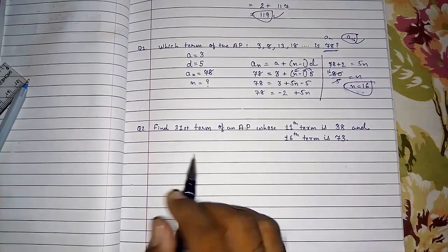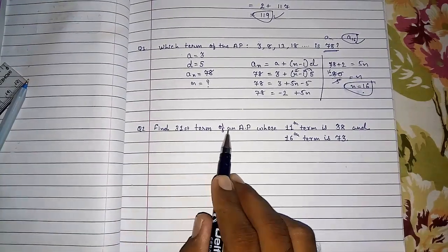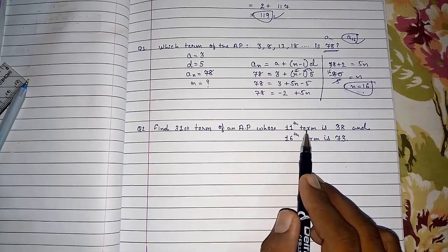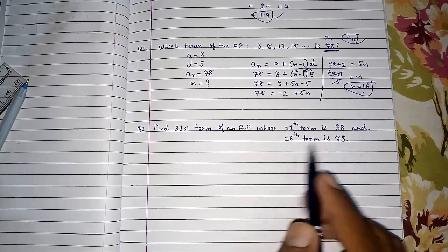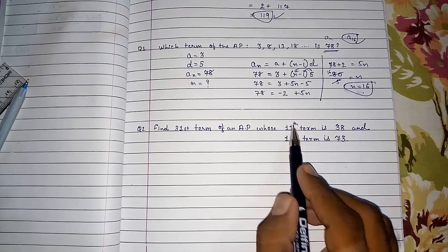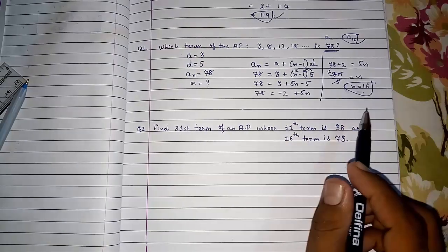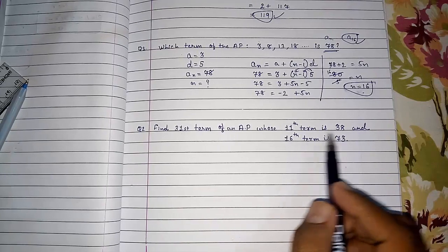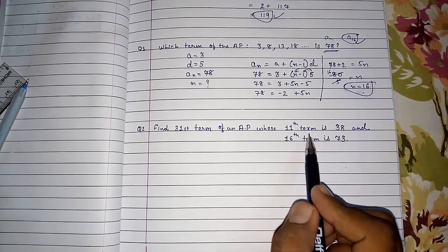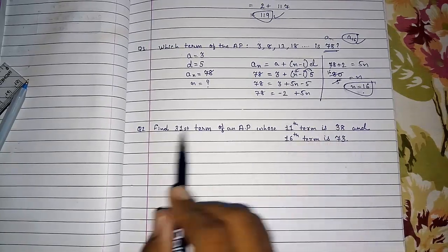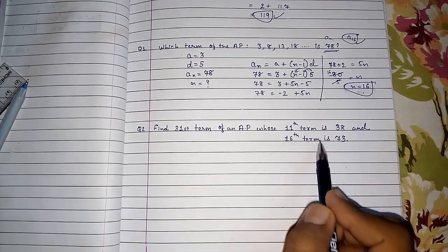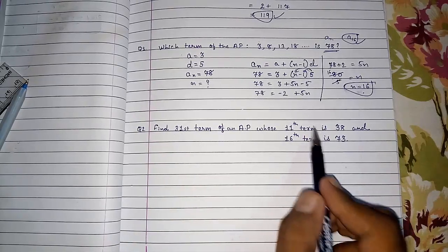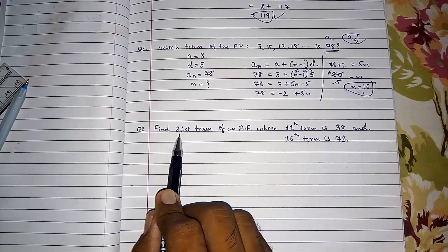Again one more example. Find 31st term of an AP whose 11th term is 38 and 16th term is 73. Means they had given 2 terms. So for finding this, first we have to find A and D from these 2 terms. And then we have to put it here.